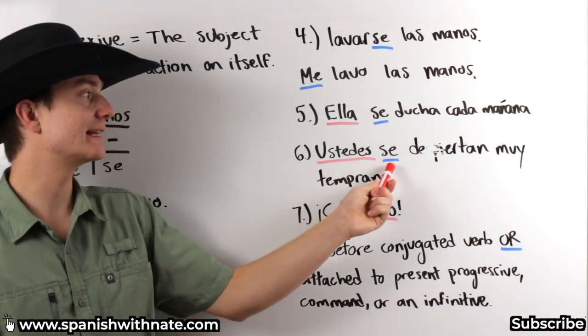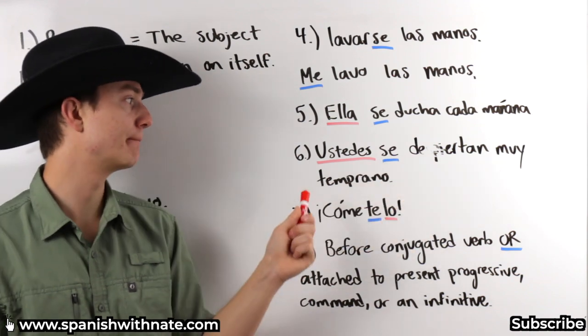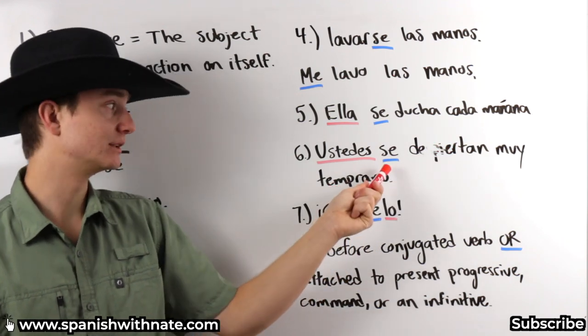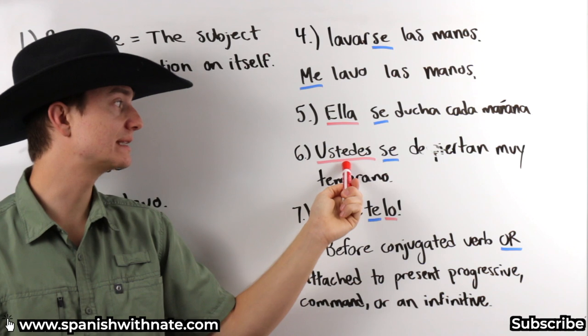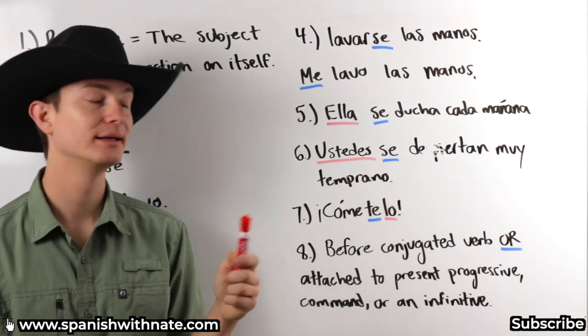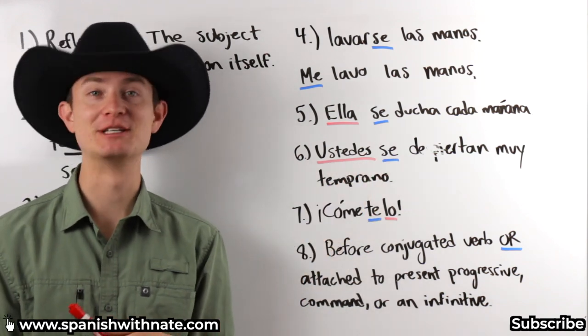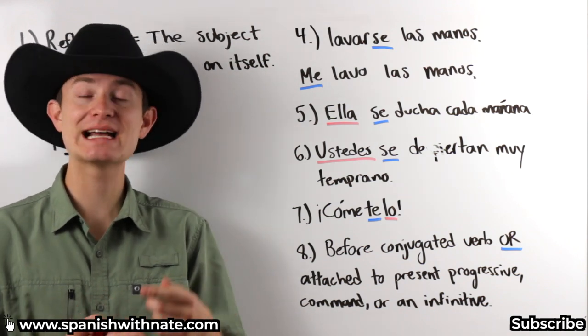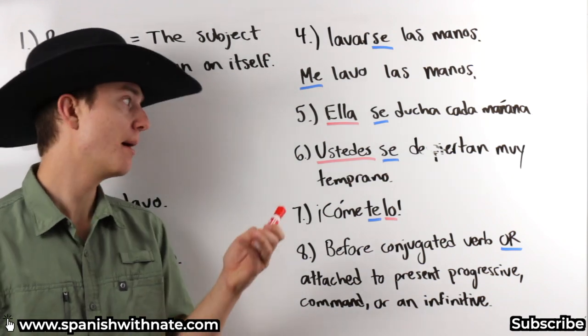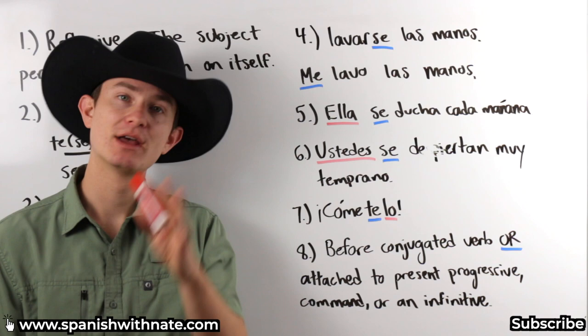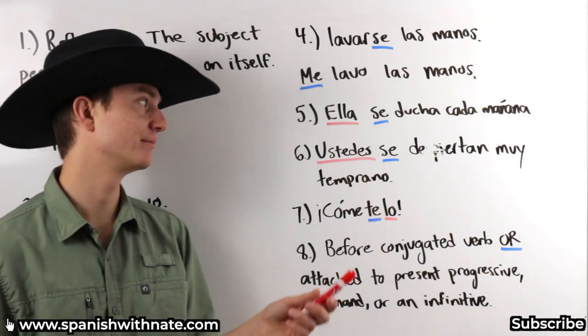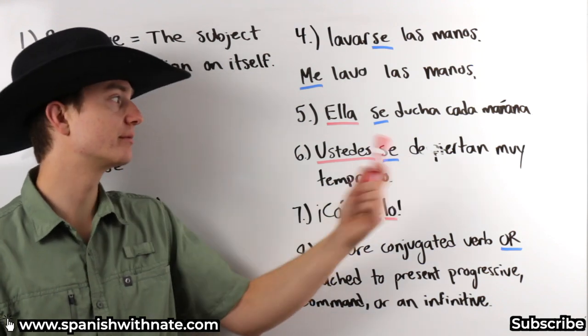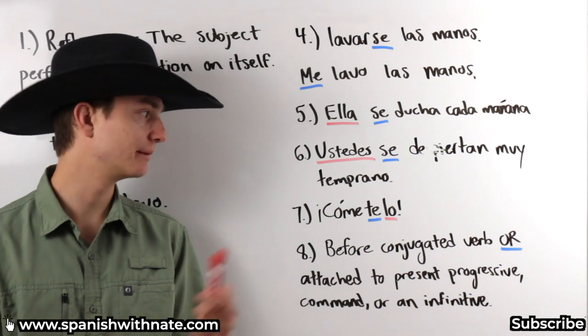Ella se ducha cada mañana. Ustedes se despiertan muy temprano. You guys wake up very early. Once again, notice how se represents ustedes in this case. That's why this little word se can be really confusing, because it can refer to the usted, el, ella, and then the ellos, ellas, ustedes. So, it can be kind of confusing. But the more and more you're practicing this, the more and more you're seeing it, the more it's just going to become second nature. You're not going to have to think about it. Ustedes se despiertan muy temprano. You guys wake up very early. The verb here being despertarse, meaning to wake up.